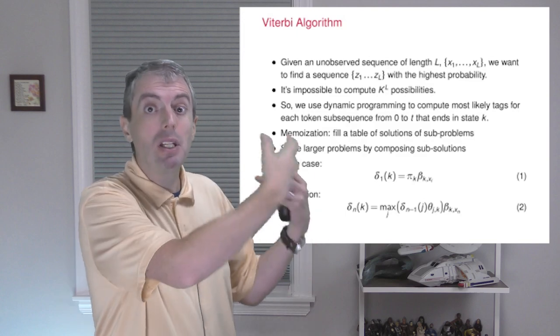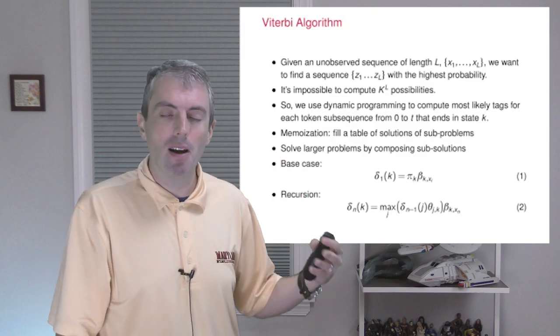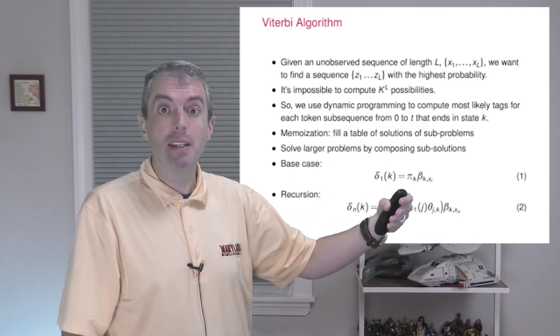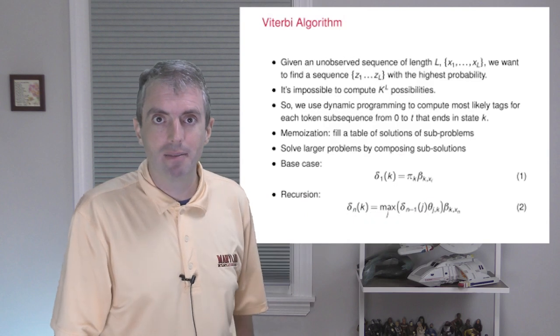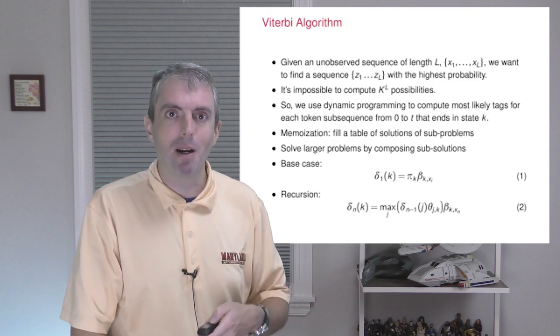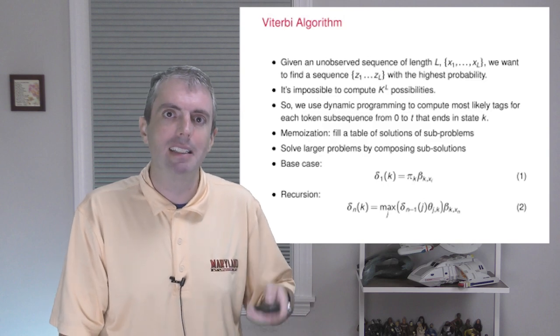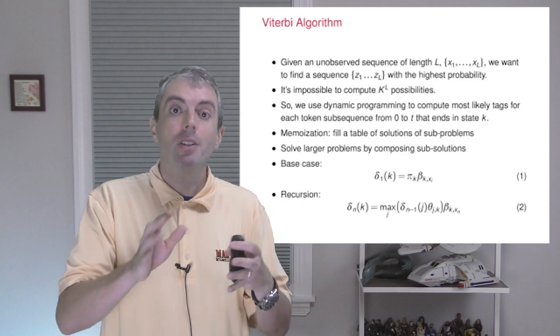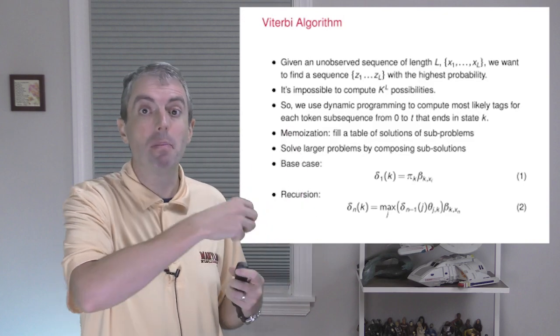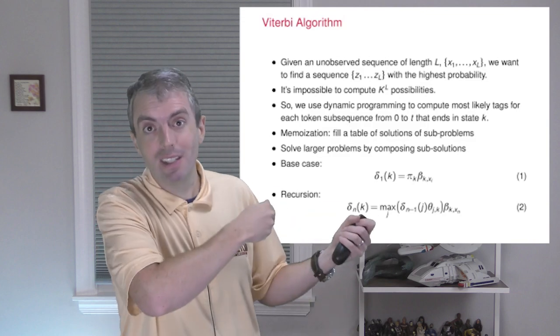Now that we have the base case, we can build on that base case using recursion to find the highest probability for any subsequence ending in a particular part-of-speech tag. This is where the Markov property of hidden Markov models comes into play. If we know the highest probability that you can get in state k at time t, it doesn't matter how you got there. Any future highest probability must be built out of a subsequence that was shorter than this one.